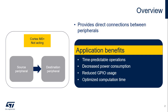The interconnect matrix integrated inside STM32 products provides direct connections between peripherals. Applications benefit from these interconnections to ensure time-predictable operations, to decrease power consumption by avoiding complex management of peripheral communications through reading or writing registers using CPU instructions, and in some cases to reduce the need to loop the signal from a source to a destination through dedicated GPIOs.